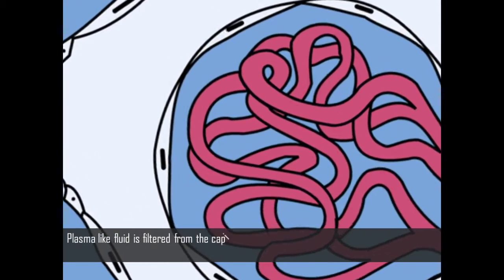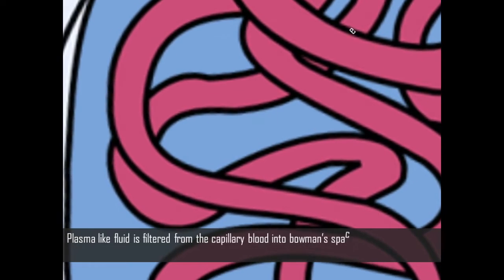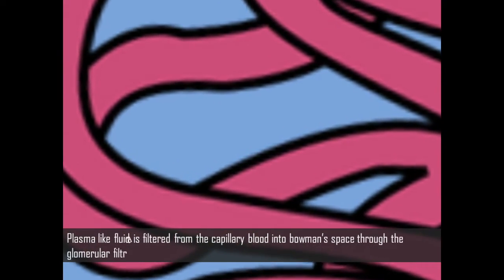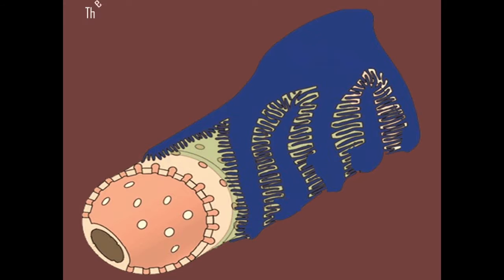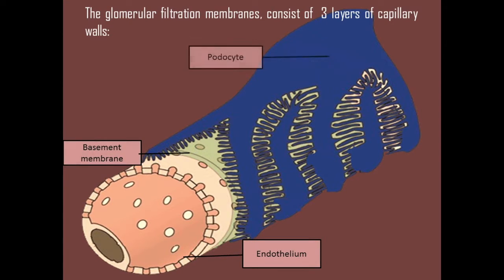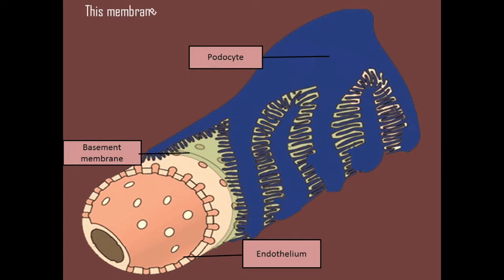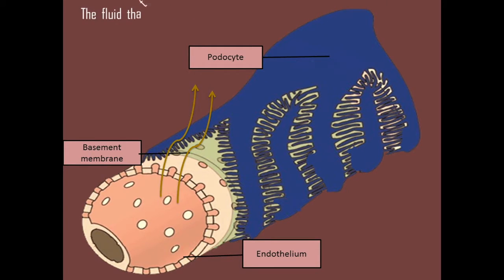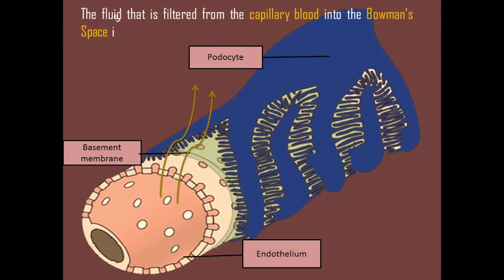Plasma-like fluid is filtered from the capillary blood into Bowman's Space through the glomerular filtration membrane. The glomerular filtration membrane consists of three layers of capillary walls: the endothelium, the basement membrane, and the podocyte. This membrane allows some particles from the blood to pass through, but not all. The fluid that is filtered from the capillary blood into Bowman's Space is called filtrate and forms the primary urine.